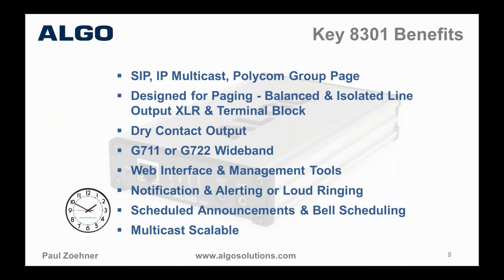Some key features of the 8301: it supports SIP, IP multicast, and Polycom Group Page among others. When we say SIP, it can actually be registered with up to 50 SIP extensions — and if we had time I could explain why and how that's used for zoning. This device was designed specifically for paging, so you have a balanced and isolated line output with XLR and terminal block connectors for twisted pair.